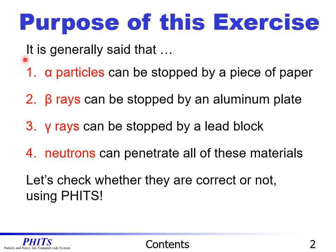It is generally said that alpha particles can be stopped by a piece of paper, beta rays can be stopped by an aluminum plate, gamma rays can be stopped by a lead block, and neutrons can penetrate all of these materials. In this section, let's check whether these are correct or not using PHITS.